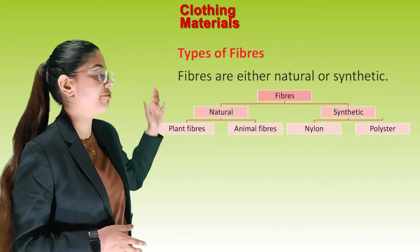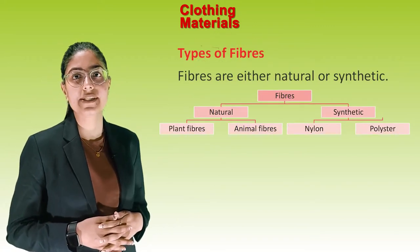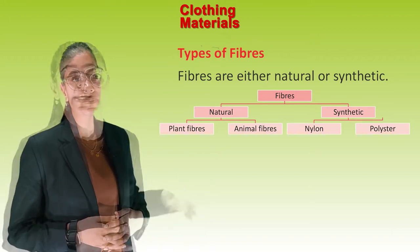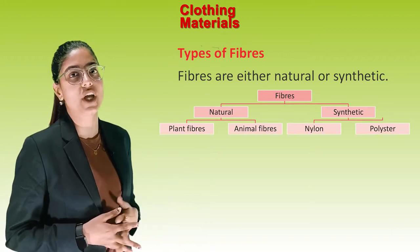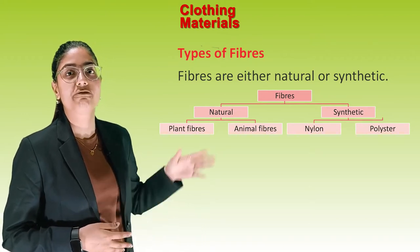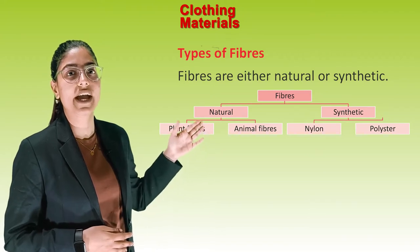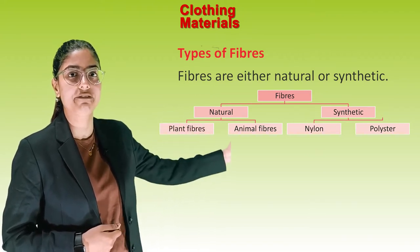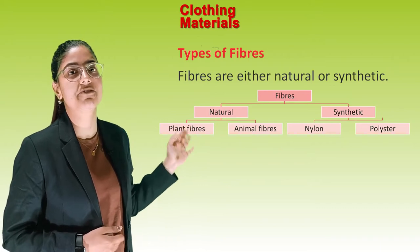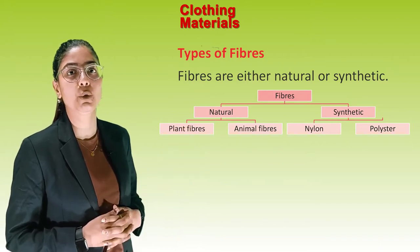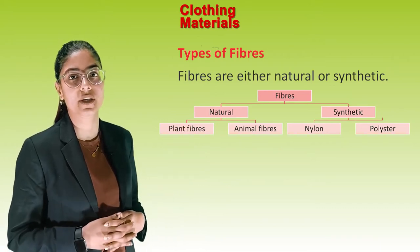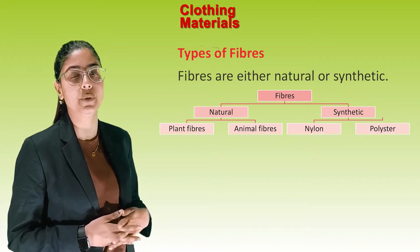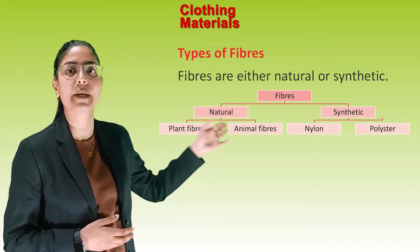Types of Fibres: Fibres are either natural or synthetic. See this flow chart for better understanding. Fibre is divided into two types: natural and synthetic. Natural fibre is further divided into plant fibre and animal fibre, whereas synthetic fibre is divided into nylon and polyester.